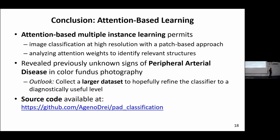From the application side, we believe we were the first to investigate detecting signs of peripheral arterial disease based on retinal images, though there are now many related papers linking other types of cardiovascular disease to retinal images. To make this more useful it would be good to have a larger dataset — it's a bit limiting to only have data from one single center. The student also made his source code available.